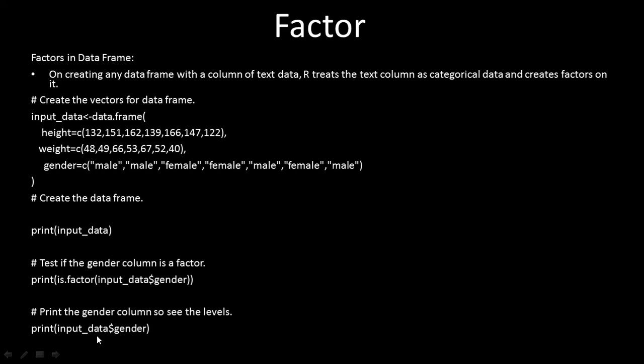Let's take one example. We create a data frame called input data with three vectors: height with integer values, weight with integer values, and gender with string values like male, female, etc. After running this code, we get a data frame and print the input data.